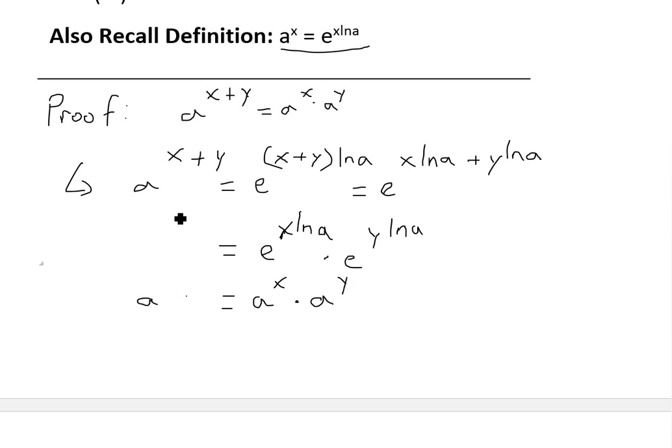And again, we'll just write this back down here. So a to the power of x plus y equals a^x times a to the power of y.